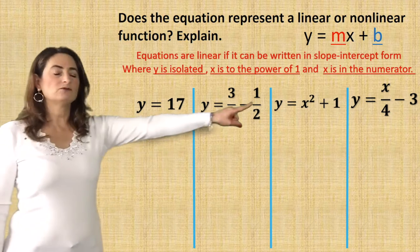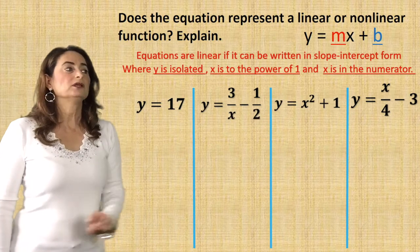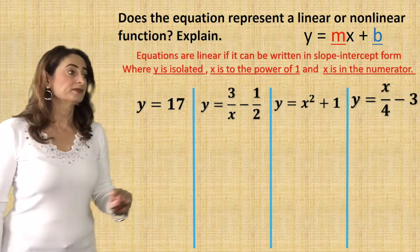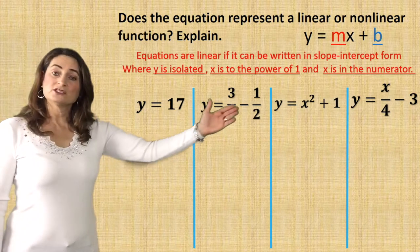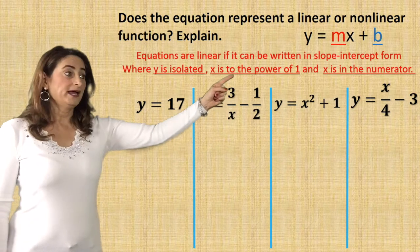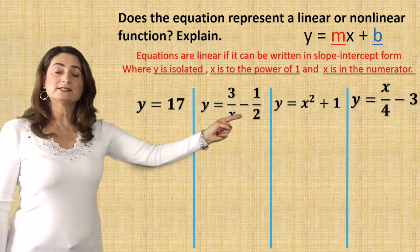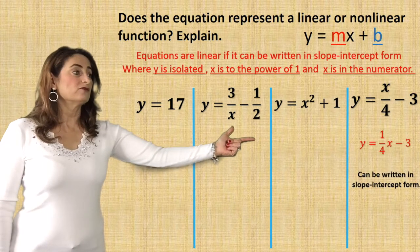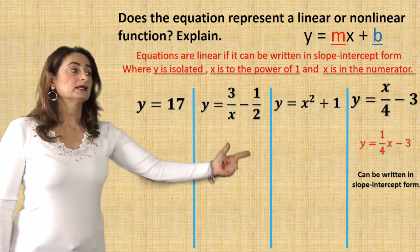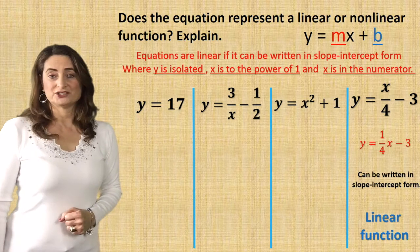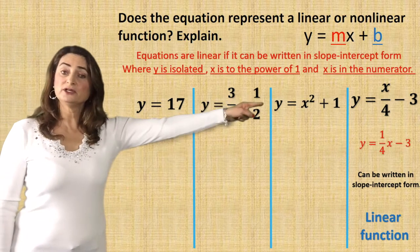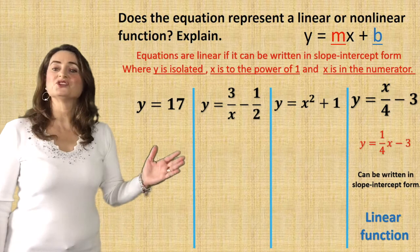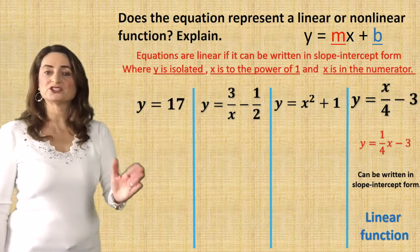Let's start with the first one: y = x/4 - 3. Can I write this in slope-intercept form? x over 4 is the same as one-fourth x. So I can write it in slope-intercept form — therefore it's a linear function. If x is in the numerator, it is a linear function because you can split the fraction and isolate x.